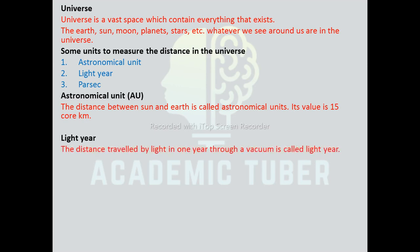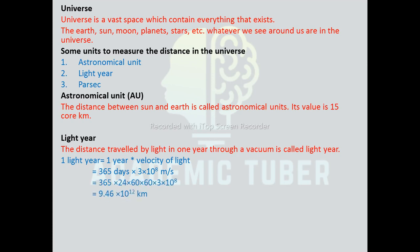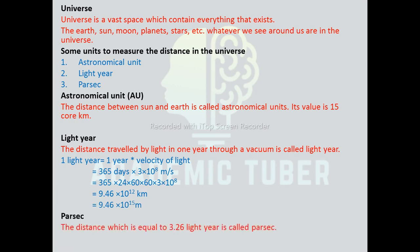Light year: the distance traveled by light in one year through vacuum is called a light year. One light year equals one year multiplied by the velocity of light — that is, 365 days times 3×10⁸ meters per second — giving 9.46×10¹² kilometers or 9.46×10¹⁵ meters. Parsec: the distance equal to 3.26 light years is called one parsec.